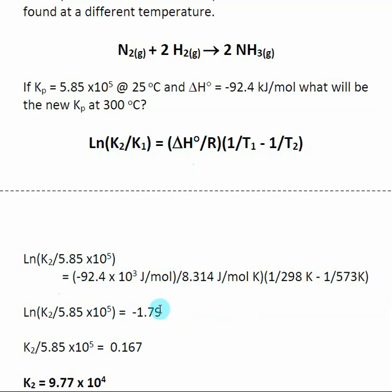And in this case, the units should be gone, remember K values are unitless. When I take this part of the equation and crunch it down, I get a negative 1.79. Then I take the inverse log of both sides, so the inverse log of negative 1.79 is 0.167. And then I go ahead and solve for K₂. So K₂ is unitless in this case.